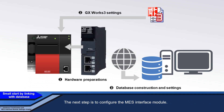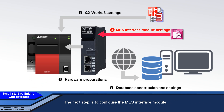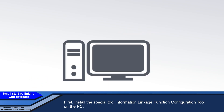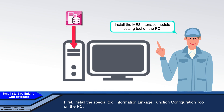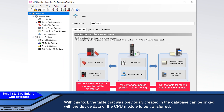The next step is to configure the MES Interface Module. First, install the Special Tool Information Linkage Function Configuration Tool on the PC. With this tool, the table that was previously created in the database can be linked with the device data of the CPU module to be transferred.